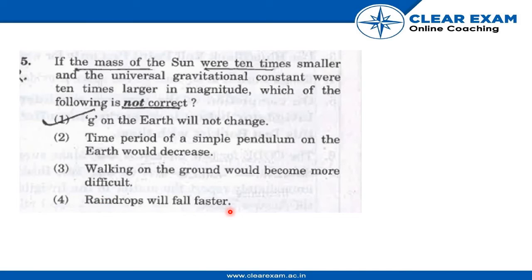Now, for the solution of this answer, if the universal gravitational constant becomes 10 times larger, then g dash would equal 10g. So the acceleration due to gravity increases. Hence, the first option that g on the earth will not change is the correct option for this question.